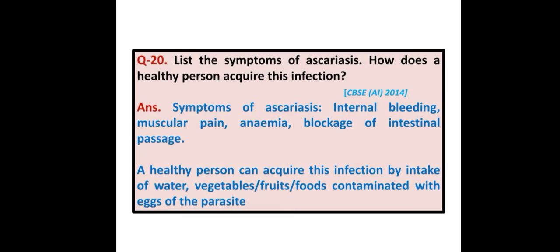List the symptoms of Ascariasis. How does a healthy person acquire this infection? Symptoms of Ascariasis are internal bleeding, muscular pain, anemia, and blockage of intestinal passage. A healthy person can acquire this infection by intake of water, vegetables, fruits, or food items contaminated with eggs of the parasite.